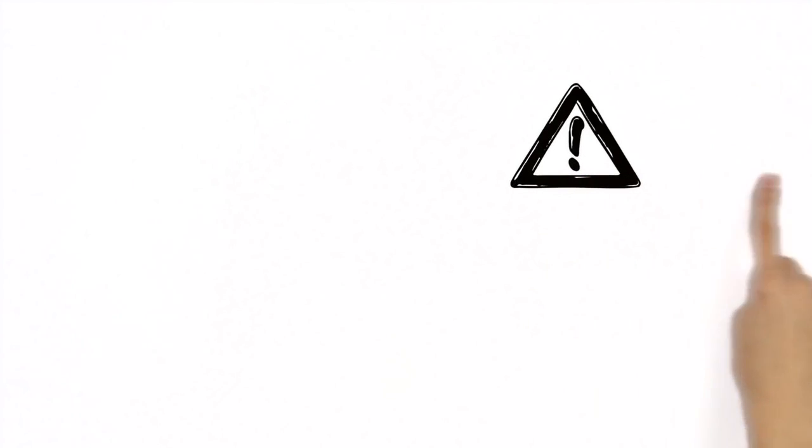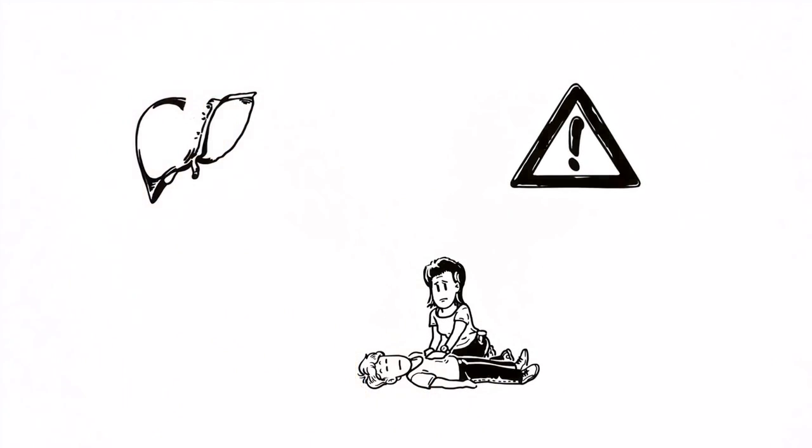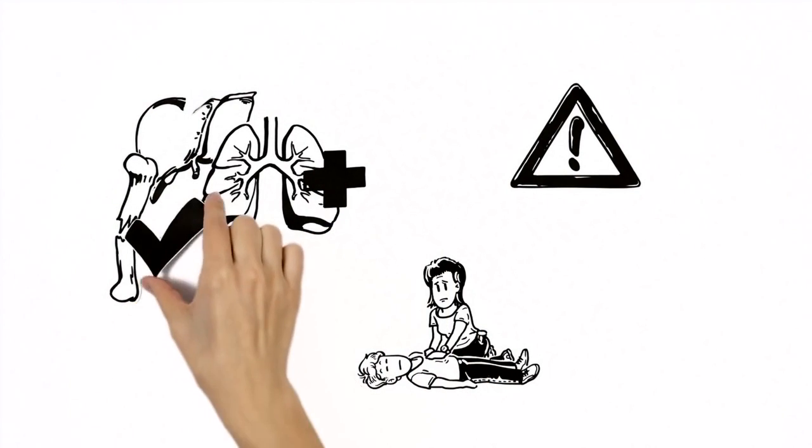But there are some complications for Maria to keep in mind. Tearing of the liver can occur, as can bruising of the lungs. Rib fractures are relatively likely, but much better than the alternative.